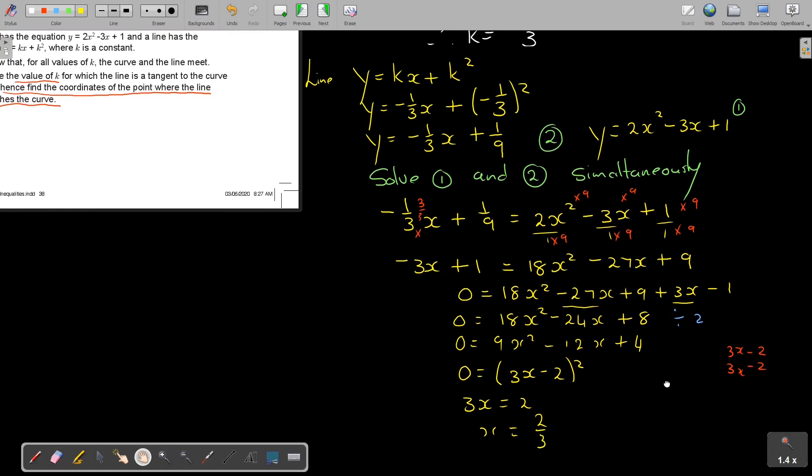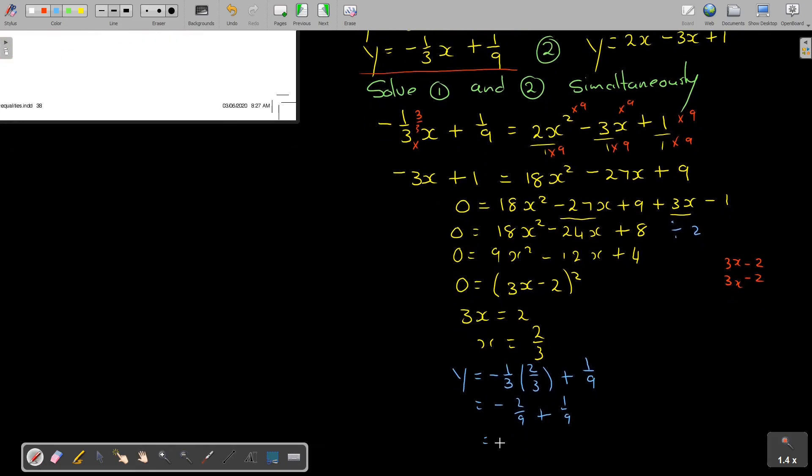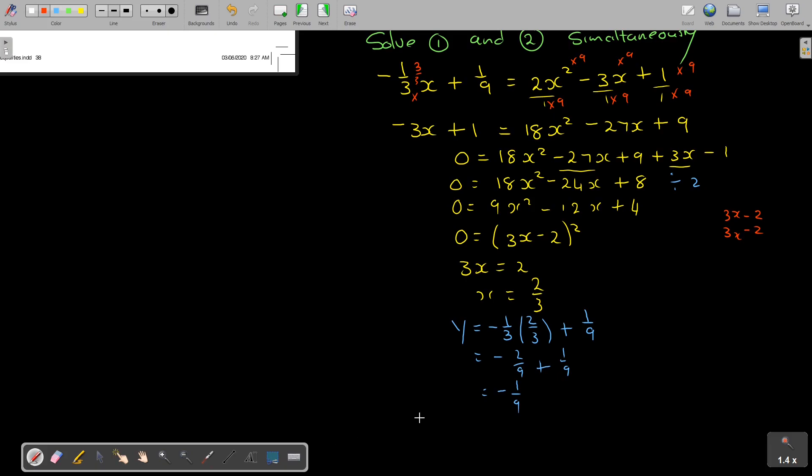And now it's only one value because it's a tangent. So now I substitute it into one of the equations and I can take any one but I think the best one is to take my straight line. Here is my straight line. I just want it red. So then I'm just going to get that Y is equal to negative 1 third and in the place of X, 2 over 3, plus 1 over 9 and that's negative 2 over 9 plus 1 over 9.